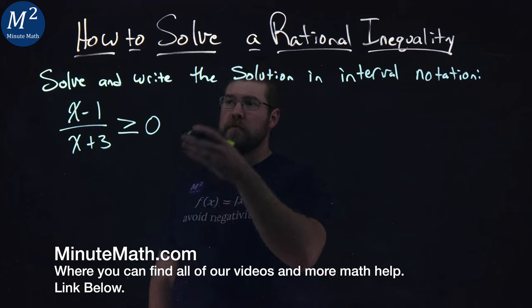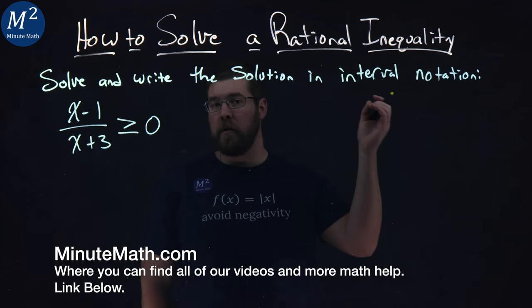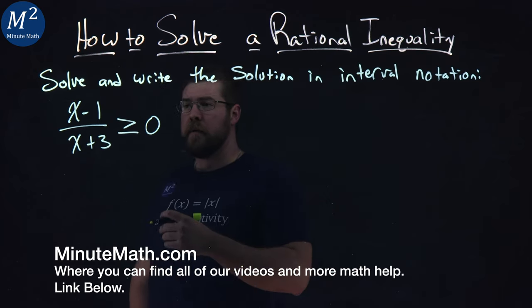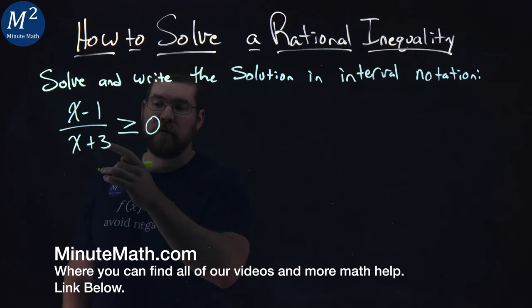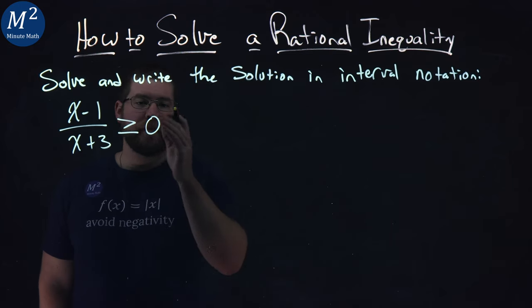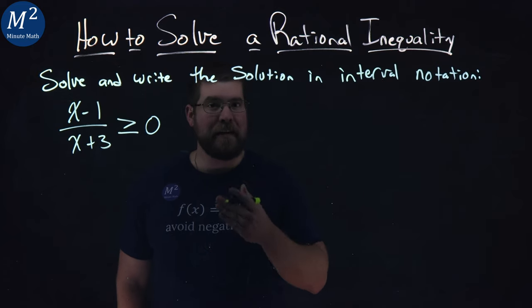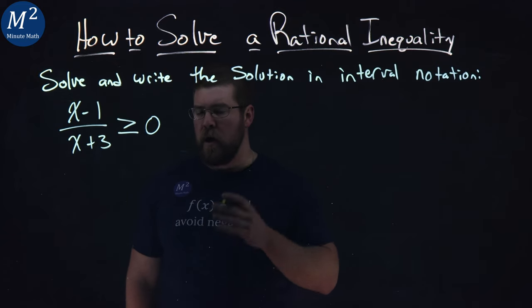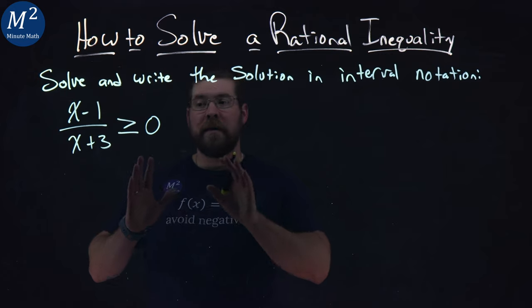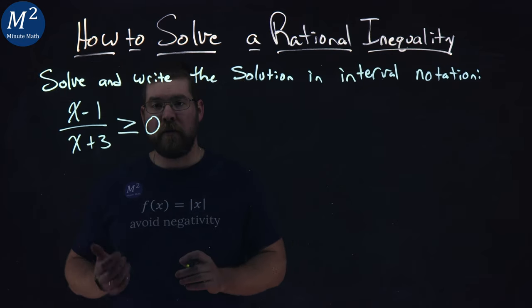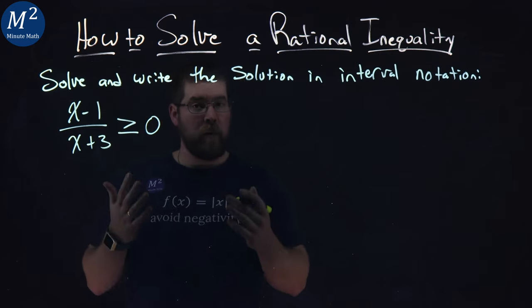We're given this problem right here. Solve and write the solution in interval notation of this inequality: x minus 1 over x plus 3 is greater than or equal to 0. This problem has a lot of steps that we need to take step by step through. First, we want to make sure our inequality has 0 on one side and everything else on the other. We already have that, so that's great.